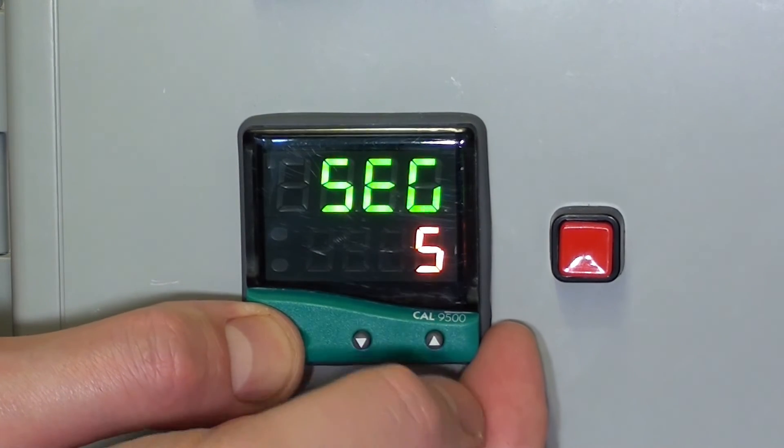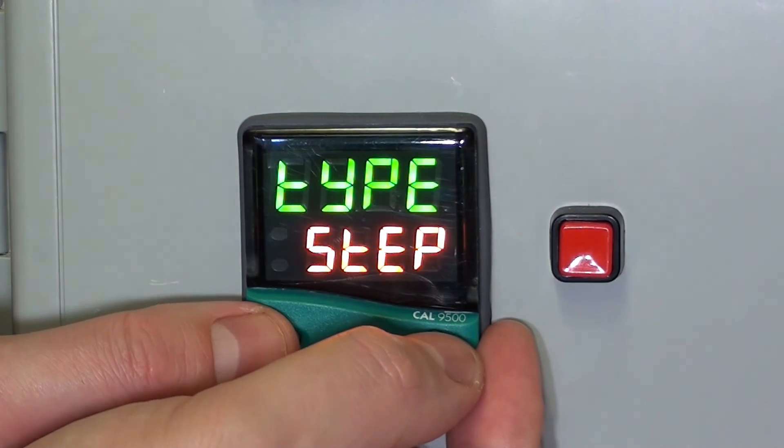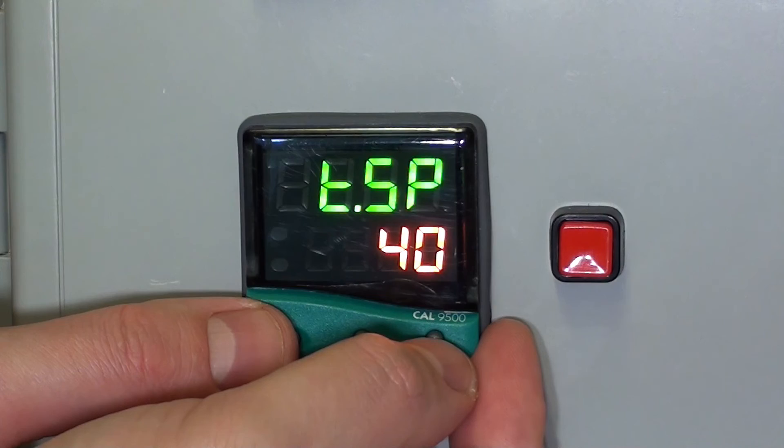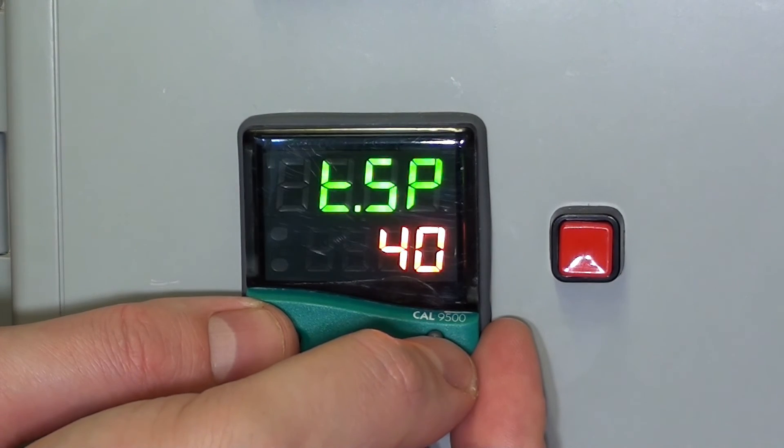Segment 5. Step. This is where we want it to step down to 40 degrees C. Target set point, 40.